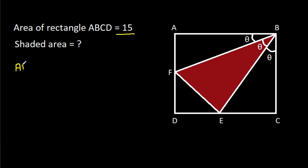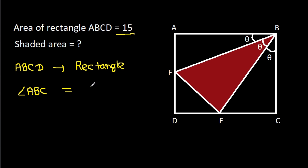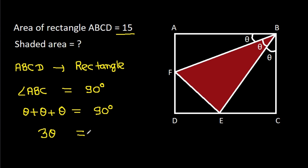ABCD is a rectangle, which means angle ABC is 90 degrees. Angle ABC is theta plus theta plus theta, so 3 theta equals 90 degrees, which gives us theta equals 30 degrees.